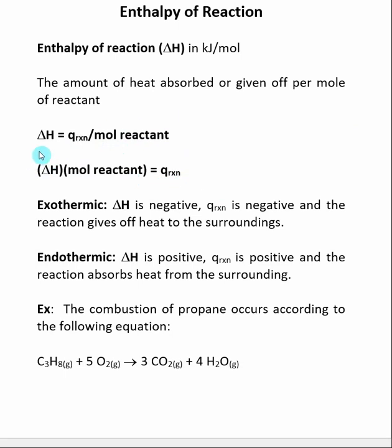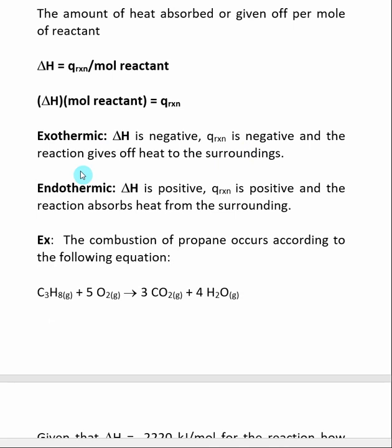So delta H is a constant for each reactant and reaction. It's something that can be looked up. But really what we're interested in is when we do a specific reaction, we can calculate how much heat is being given off or absorbed during that reaction, because we're going to know how many grams of reactant and therefore how many moles of reactant. There's two different situations.